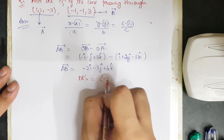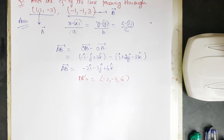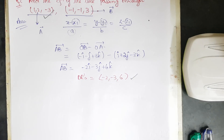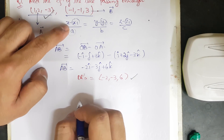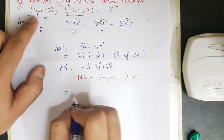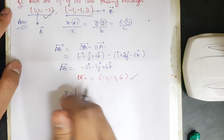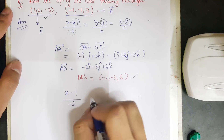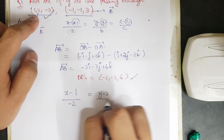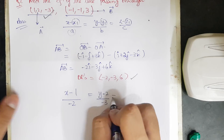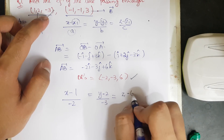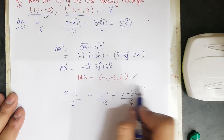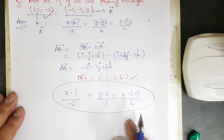We have found the DRs and we know the point through which the line passes. Substituting the values: (x−1)/(−2) = (y−2)/(−3) = (z−(−3))/6, which becomes (x−1)/(−2) = (y−2)/(−3) = (z+3)/6. This is the Cartesian form of the equation derived for the given two points.